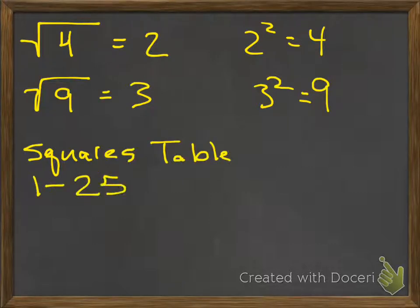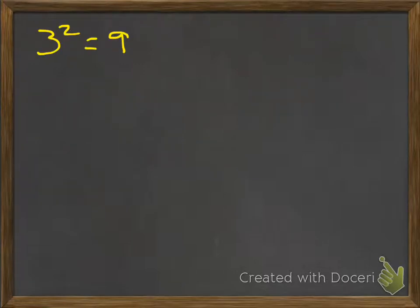Please pause and make a squares table from 1 to 25. So 1 squared is 1, 2 squared is 4, and so on. That way you'll know the square roots: square root of 4 is 2, square root of 9 is 3, square root of 16 is 4, and so on. Take a few moments for that.